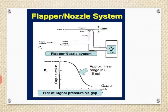This is the plot of signal pressure versus gap. The relationship is approximately linear — we can see that the output pressure and the gap are linearized.